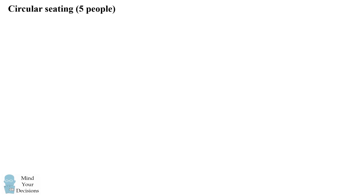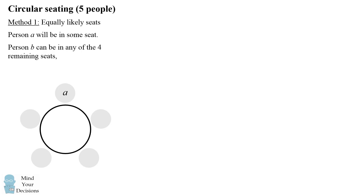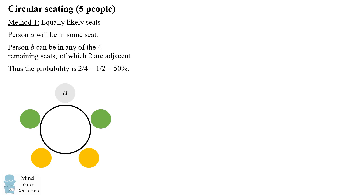We'll first consider seating around a circular table with five people. There are a couple of ways we'll solve this. The first method is to consider equally likely seats. We have a circular table with five different seats. Person A will be in some seat — without loss of generality, we can make it the seat at the top of the diagram. Person B can be in any of the four remaining seats, and it's equally likely that B will be in any of these seats. Of these seats, exactly two of them will be adjacent to A. Therefore, the probability that A and B will be seated adjacent is two divided by four, which equals one half — that's fifty percent.